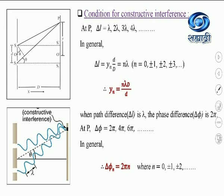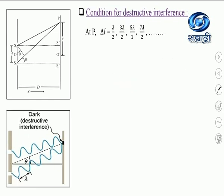Now let us go to the conditions for destructive interference. We take point P on the screen. At point P, if destructive interference takes place, the crest of one wave overlaps with the trough of the other wave and vice versa. You can see this in the second diagram. In this case, the point obtained on the screen is the point due to destructive interference — it is the dark point. For this dark point at P, the path difference delta L should be equal to λ/2, 3λ/2, 5λ/2, 7λ/2, and so on.